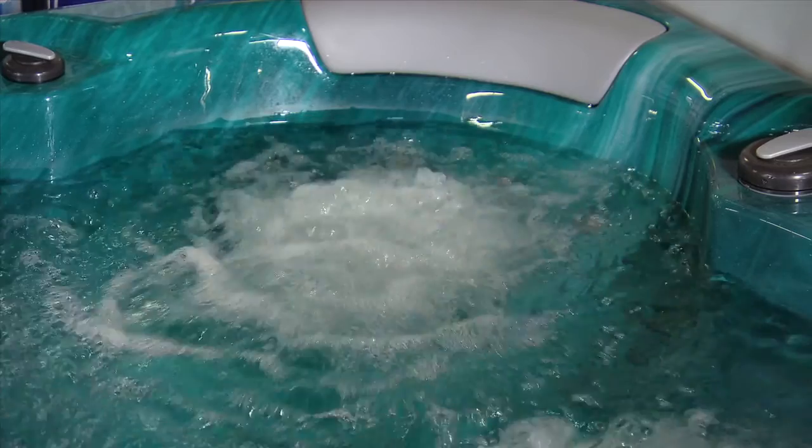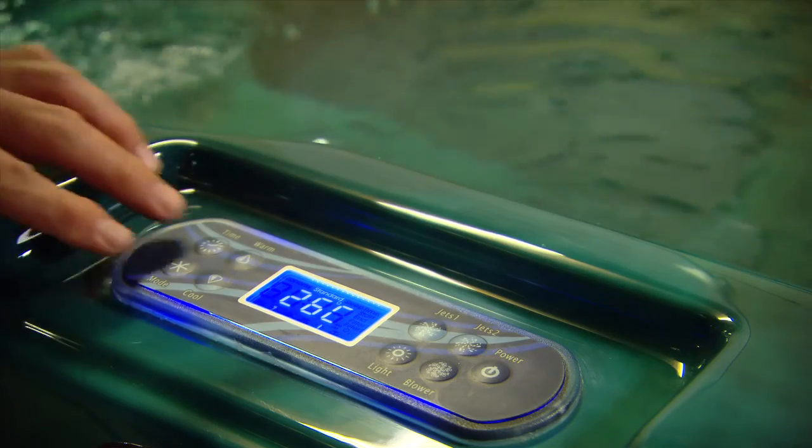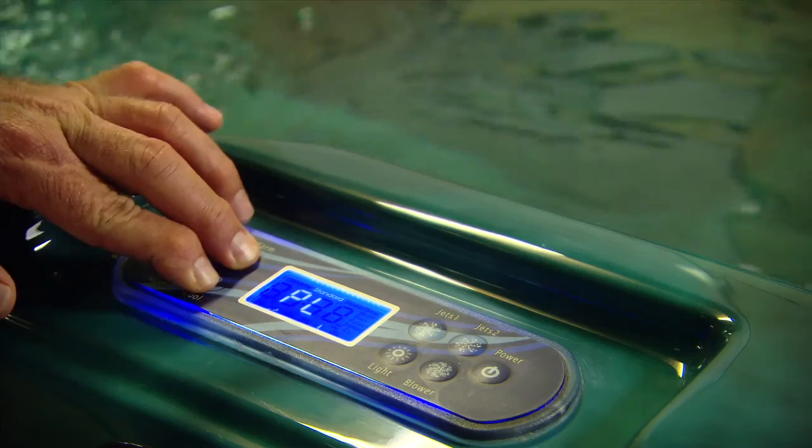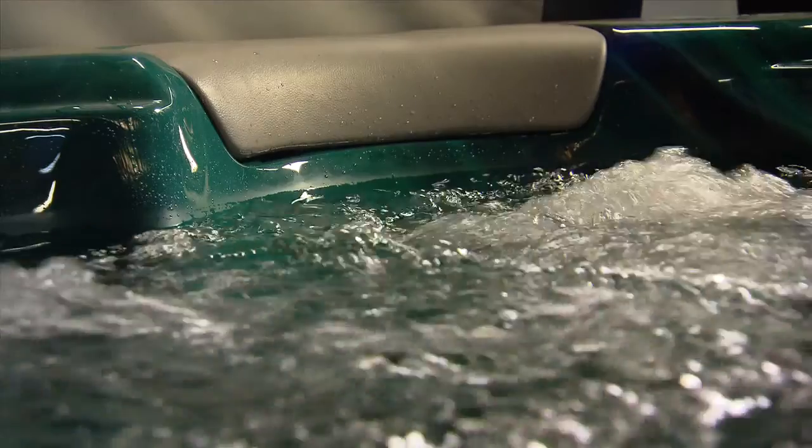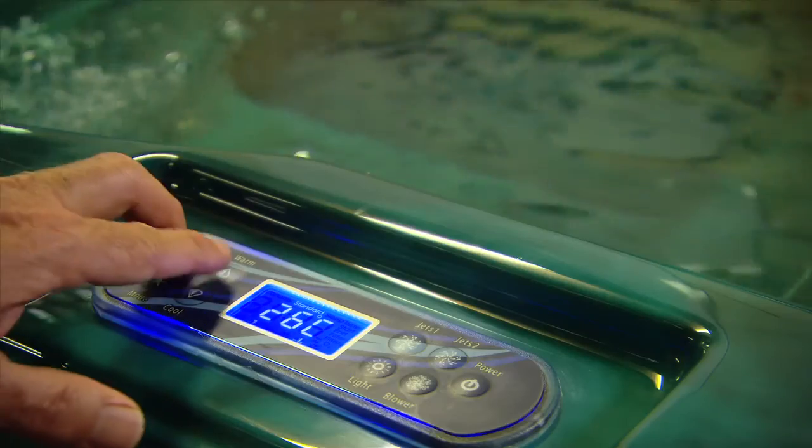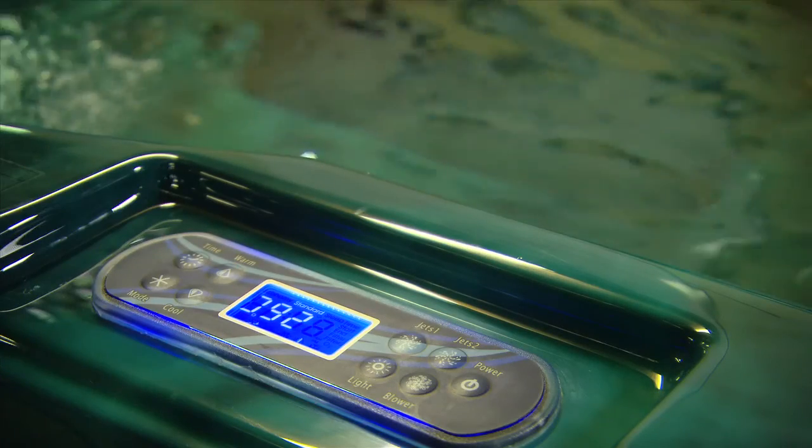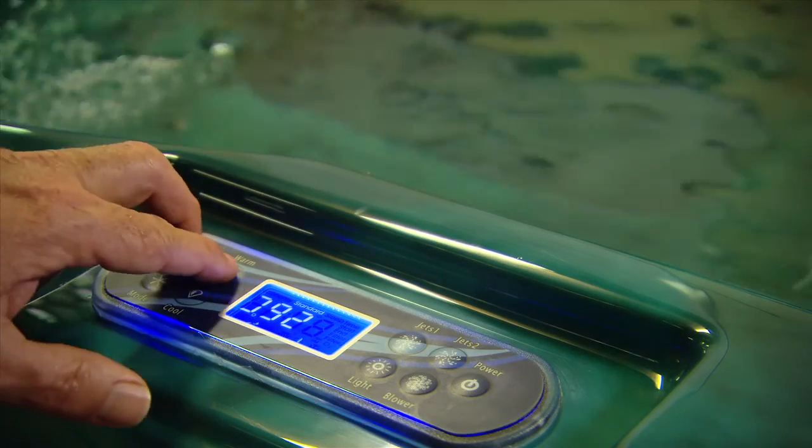If you don't want people using your spa or changing settings, you can lock the control panel by pushing the warm and cool buttons at the same time. Unlock by pushing the same buttons again. You can invert the display panel also by pushing the time and warm button at the same time. And to swap it back, push them again.